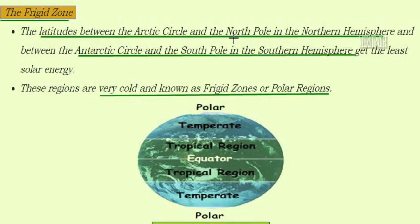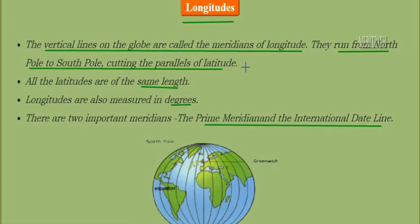The frigid zone covers latitudes between the Arctic Circle and the north pole in the northern hemisphere, and between the Antarctic Circle and the south pole in the southern hemisphere. These regions receive the least amount of sun rays, making them very cold. They are known as the frigid zones or polar regions.